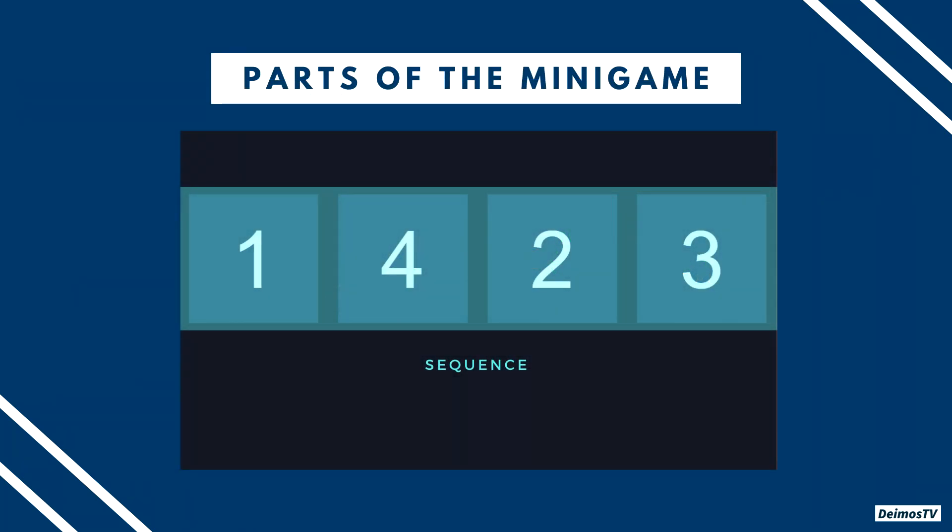Now let's discuss the sequence. It's pretty straightforward — you only need to memorize the order of the numbers provided to you. The amount of numbers may vary from one heist to another. For the Fleeca and the Big Bang, that's going to be just four numbers, but for the underground Big Bang vault, it's going to have six numbers instead. For this discussion, let's stick to four. So in this case, the sequence is 1, 4, 2, 3. Say it multiple times and make sure you're not being disturbed.